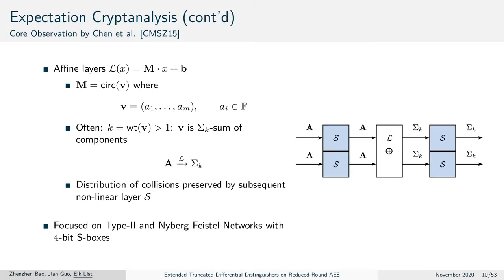This means if all values in a subset or subspace are used, they will sum to zero. After the linear layer the sum will be preserved. However, the next non-linear layer will destroy this property and the integral distinguisher will end. What they observed is that the linear layer in many primitives behaves similar to a sum of permutations. For instance, an affine layer consists of a matrix multiplication with a circular matrix and some addition. This matrix multiplication is de facto the sum of the individual components of the input vector.